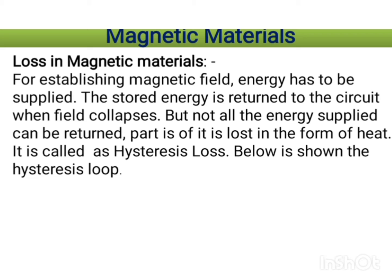There are some losses in magnetism. Just like in any conductor where current flow causes power dissipation, magnetic materials also experience losses. For establishing a magnetic field, energy has to be supplied. The stored energy is returned to the circuit when the field collapses, but not all energy supplied can be returned — part of it is lost in the form of heat. This is called hysteresis loss.